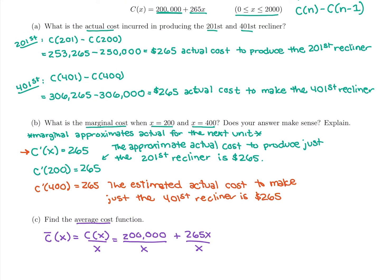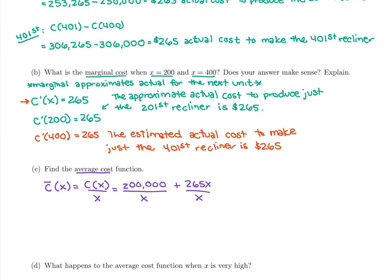We can leave it just like that. If we have to take the derivative, if we have to find marginal average cost, then I would obviously want to rewrite that as $200,000x^(-1) plus $265. We could simplify it but let's just see what the next part asks.